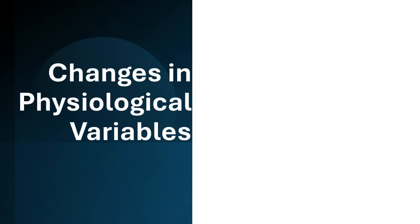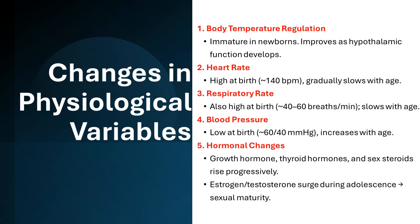Changes in physiological variables: 1) Body temperature regulation — immature in newborns, improves as hypothalamic function develops. 2) Heart rate — high at birth (140 BPM), gradually slows with age. 3) Respiratory rate — also high at birth (40–60 breaths/min), slows with age. 4) Blood pressure — low at birth (60/40 mmHg), increases with age. 5) Hormonal changes — growth hormone, thyroid hormones, and sex steroids rise progressively.